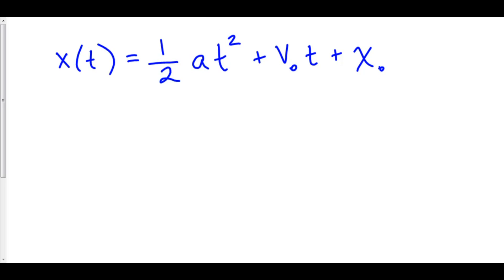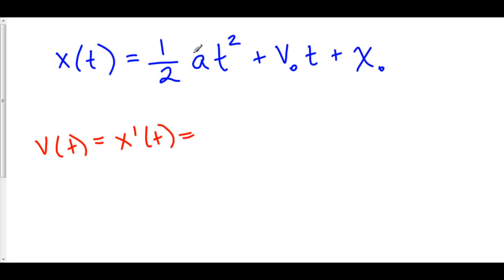So when we find the velocity, the velocity is just the derivative of the position — it's one step down the ladder. The derivative of one half at squared: the two comes out in front, cancels out with the one half, and we have at plus v-naught times t, which is just v-naught. And x-naught goes away because the derivative of a constant is just zero. So right here is the velocity function based upon this particular position function.